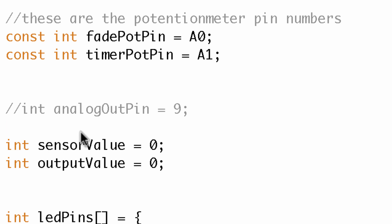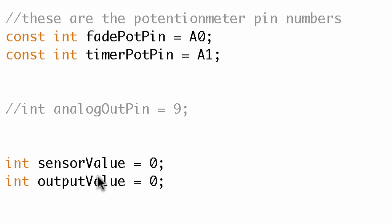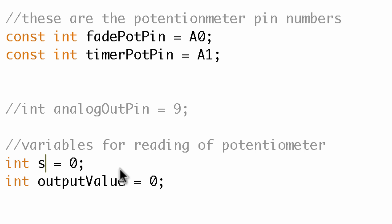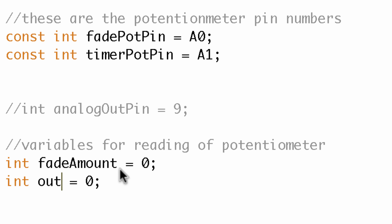We've also got two variables here that are tracking what gets read at those pins. I'm going to change their names so they're a little more straightforward: I'll name the first one 'fadeAmount' and the second one 'timer'. All I've really done is changed the naming convention — I haven't changed the content of the code at all.